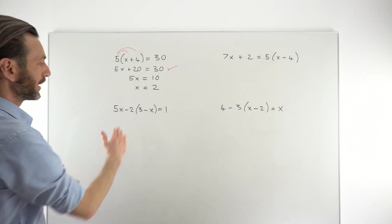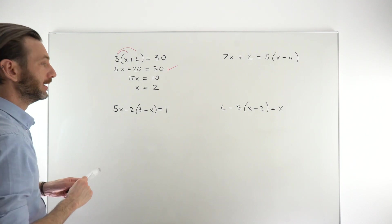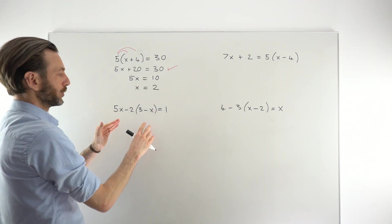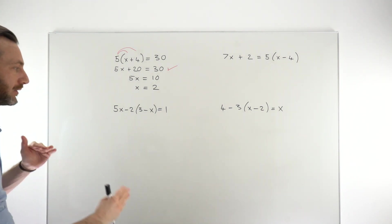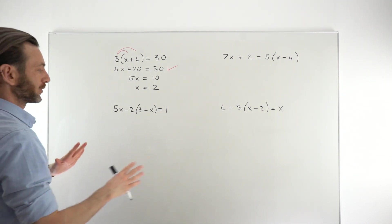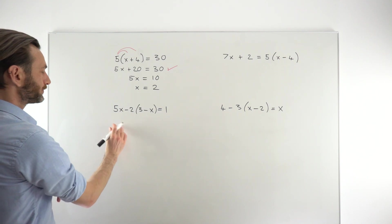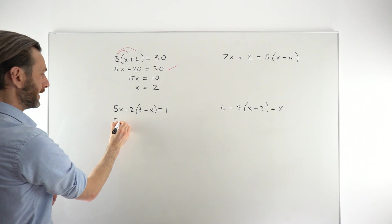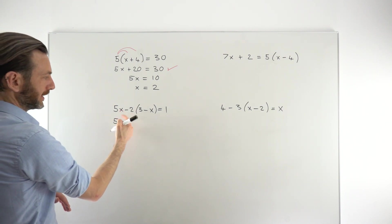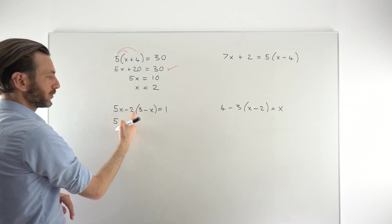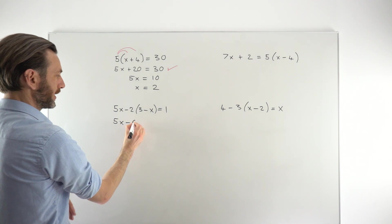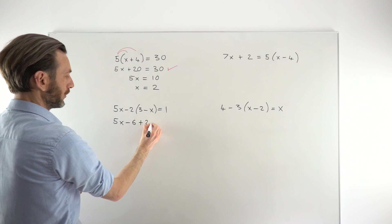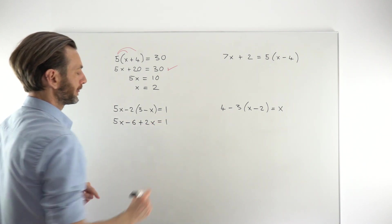The challenge with these is just being careful about how you expand out the bracket, particularly when you've got scenarios like this, where you've got negatives floating around, especially where you might have double negatives. Just be ultra careful with those. So the 5x is not touching the bracket, so we're just going to leave the 5x where it is. We're just multiplying the minus 2 into the bracket. Minus 2 times positive 3 is negative 6. Negative 2 times negative x, that's a double negative, so that'll be plus 2x equals 1.